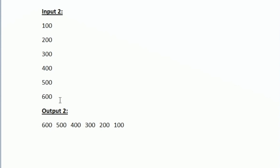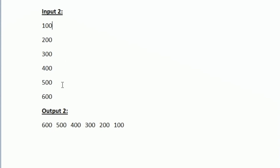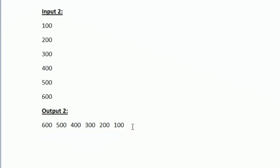In sample input 2, we are given the list 100, 200, 300, 400, 500, 600 vertically. We again reverse the list, but since the input is given vertically, we print the output horizontally — in a single line. So if input is horizontal, output is vertical; if input is vertical, output is horizontal.